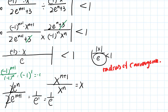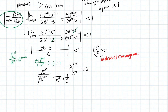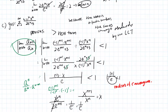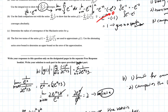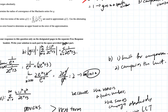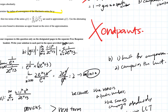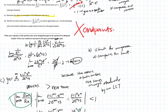We don't need to test the endpoints because the question only asks for the radius of convergence, not the interval of convergence. If it asked for the interval, we would test endpoints, but here we're done.